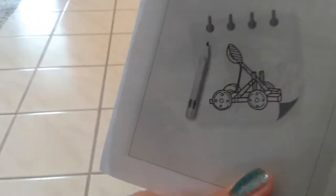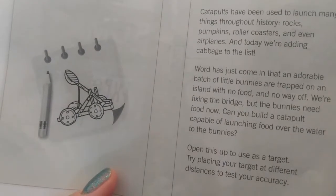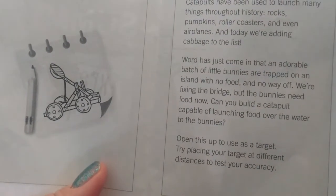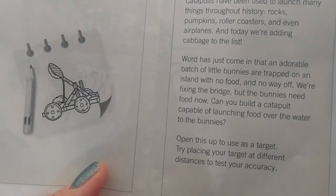Summer at Your Library experience kit. Let's open up the paper first. Oh, here's a picture of a catapult. See what this says? Catapults have been used to launch many things throughout history: rocks, pumpkins, roller coasters, and even airplanes.